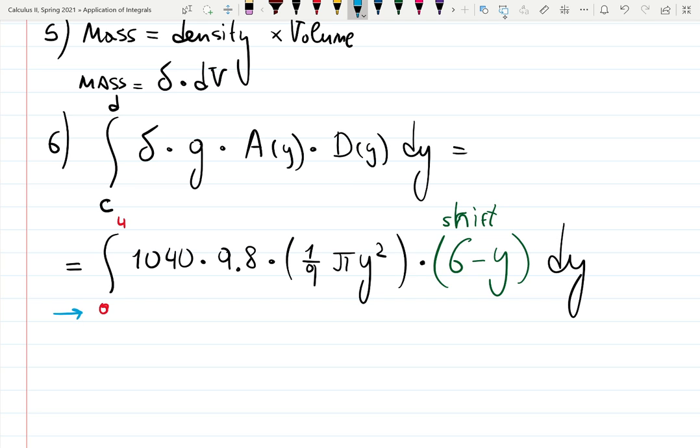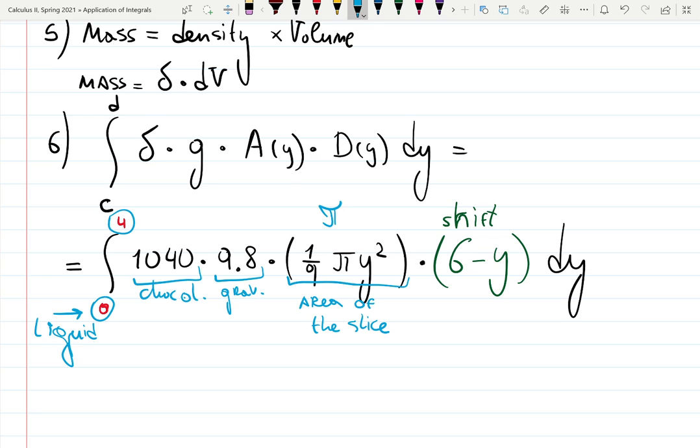Stare at this integral for a bit and see if you understand it. From 0 to 4, that is the location of the liquid. 1040, that's the chocolate density. 9.8, that's the gravitational constant. Then that is the area of the slice. Since we're working with circles, we have π r² here. dy is the width of each slice. That gives me a volume. These two guys together give me a volume of each slice. And finally, 6 minus y, that's how far the liquid is traveling.